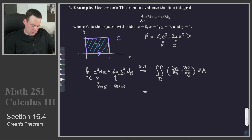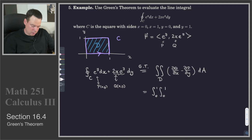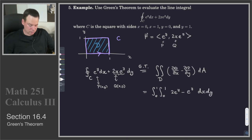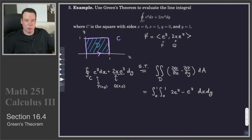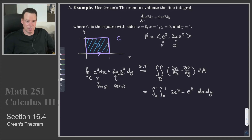Because we are integrating over the region D, which is a square with x going from 0 to 1 and y going from 0 to 1, we can write that down. dQ/dx is 2e^y and dP/dy is e^y. The x and y integrals can be done in any order, so we'll go dx dy. So there's Green's Theorem in action. If I wanted to do the line integral directly, I'd have to come up with parametrizations for each of the four line segments making up the square — four individual line integrals.